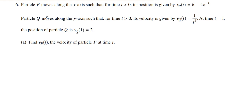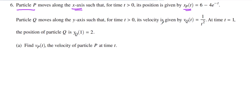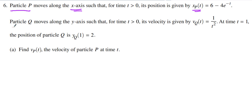They gave me two particles. They gave me particle P — particle P is moving on the x-axis, and this is the position function of particle P. And then there's particle Q — particle Q is moving along the y-axis, and they gave us a velocity function. They also told me that particle Q's position at time equals one is equal to two. Part A said find V of P — find the velocity function of particle P.